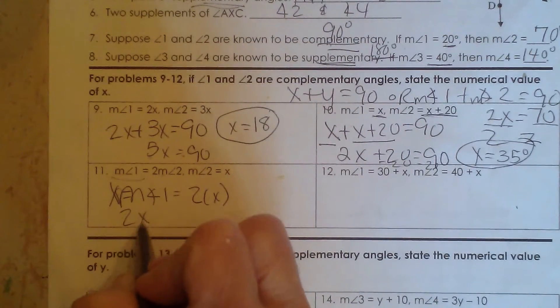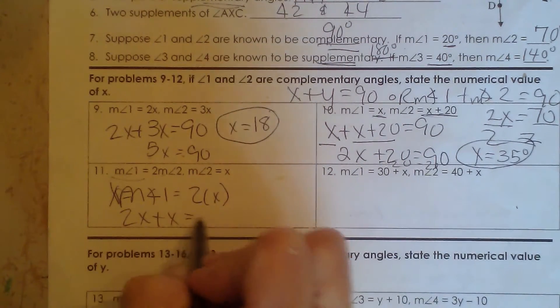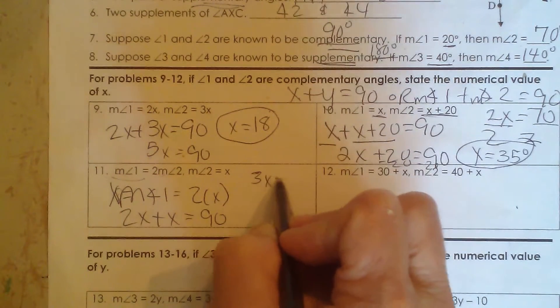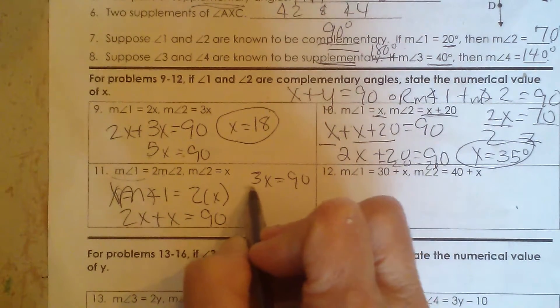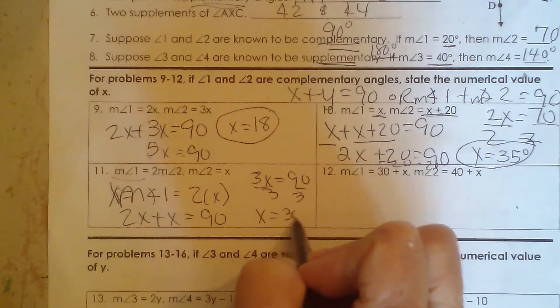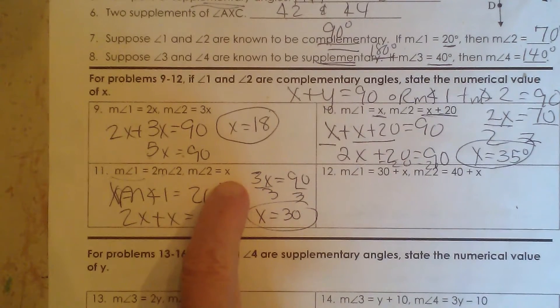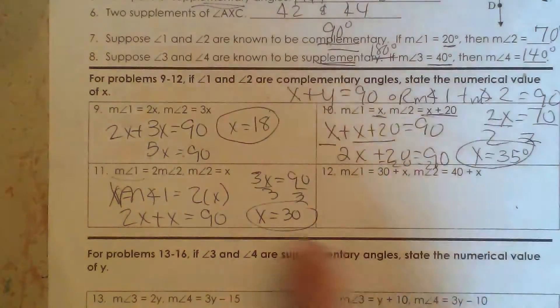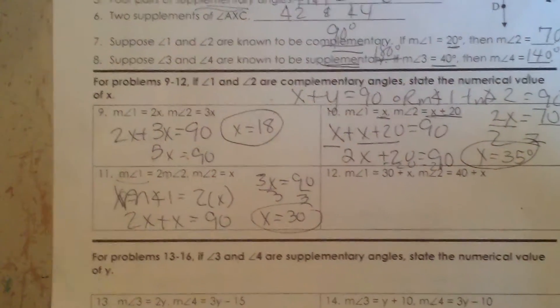So now I have 2x plus x is equal to 90. So 3x is equal to 90. Divide by 3, and x must be 30. So that means 30 is angle 2. And 2 times 30, which would be 60, would be angle 1. And that works out because those both add to 90.